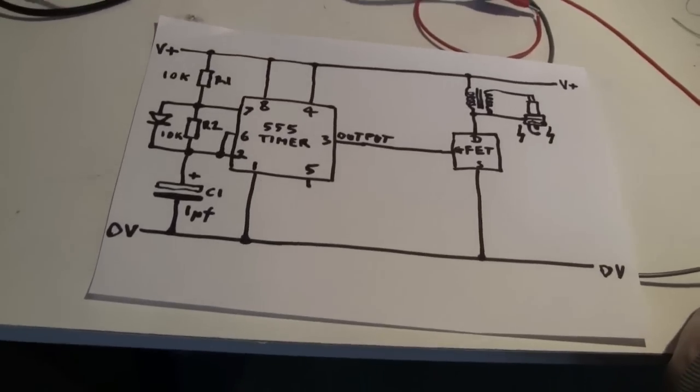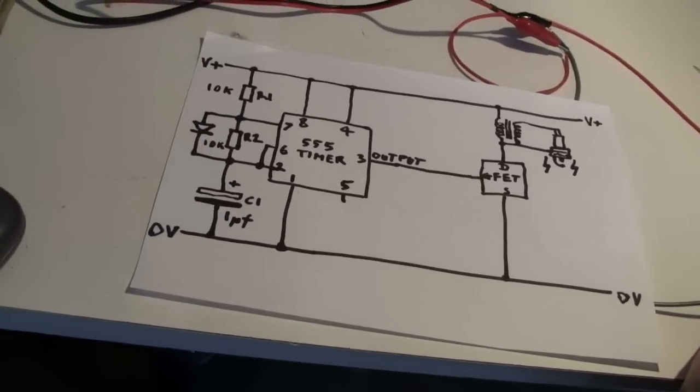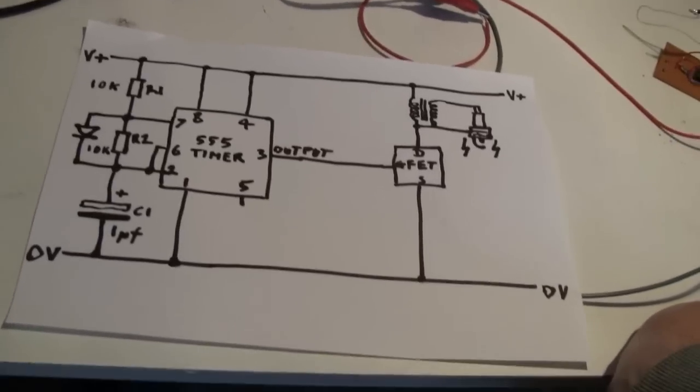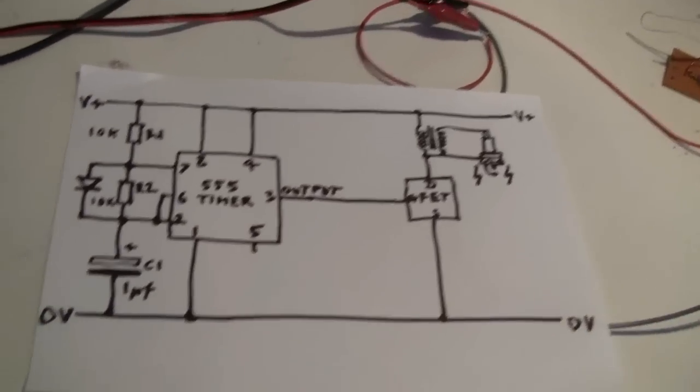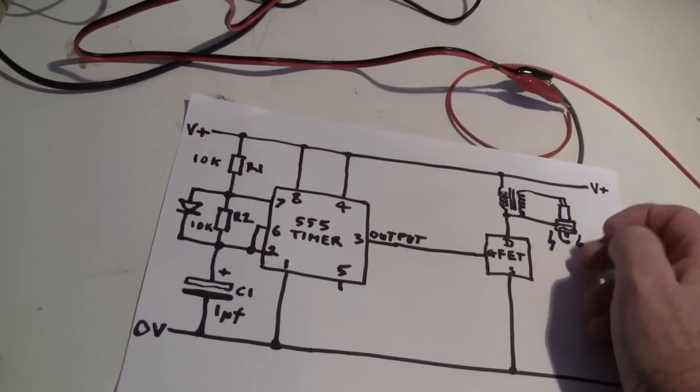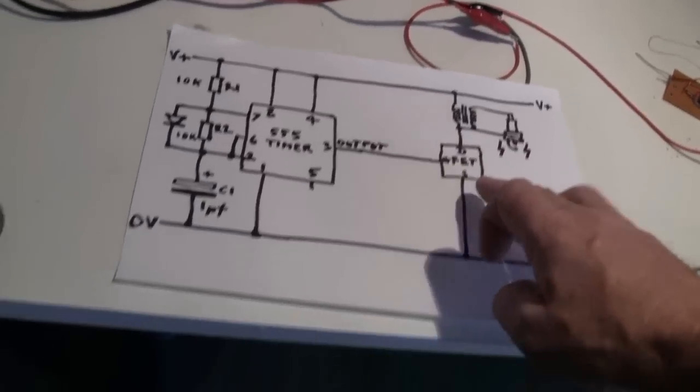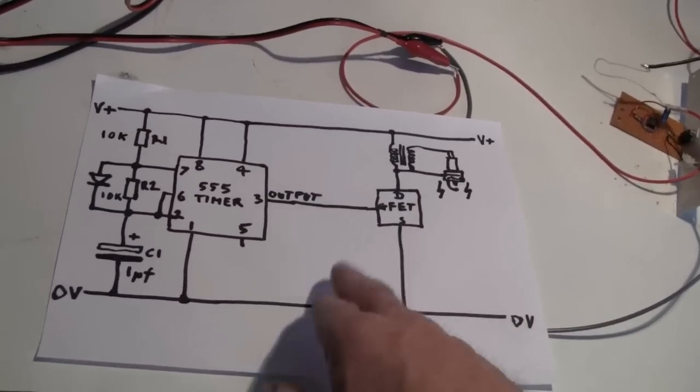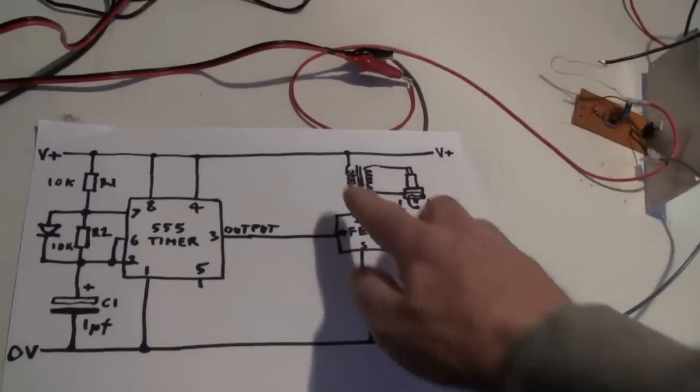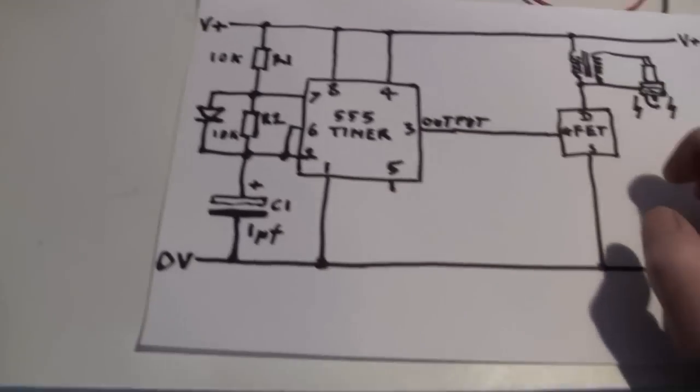This goes into the gate of a field effect transistor. I've used an N-channel 30A one, so it's nice and low on resistance. The ignition coil primary is connected to the positive rail. When it comes out the other side of the primary into the drain of the field effect transistor, which gets switched onto the source, and the source is connected to 0 volt. And the secondary, obviously, the high voltage side is connected to the spark plug. So that's the circuit.